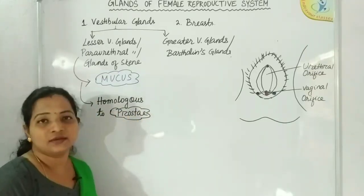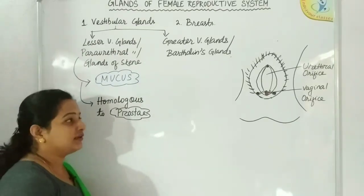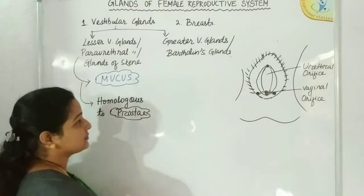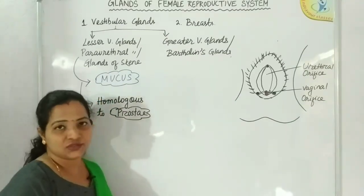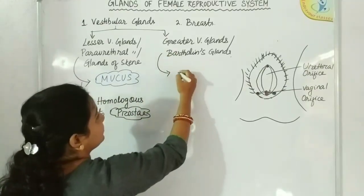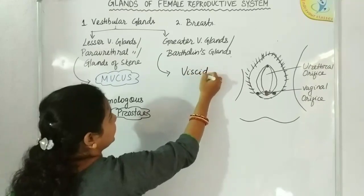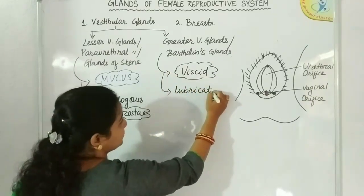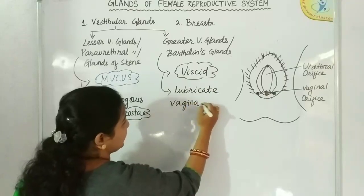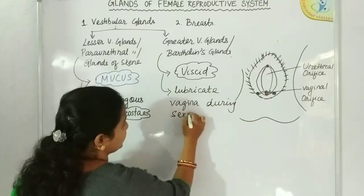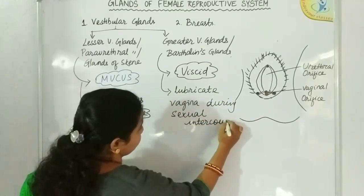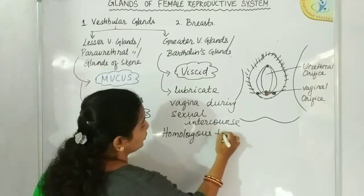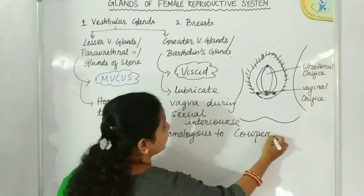Next, we will move to the greater vestibular glands. These are two pea-sized glands, as you can see here. Their ducts open into the external vaginal orifice and they secrete a thick viscid fluid which lubricates the vagina during sexual intercourse. The greater vestibular glands are homologous to the Cowper's glands, or bulbo-urethral glands, of the male.